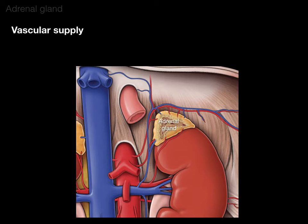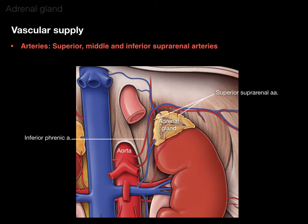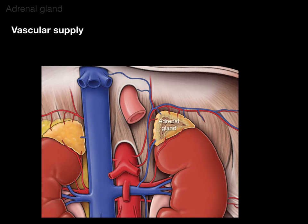The arteries that supply the adrenal gland are the suprarenal arteries — there are three of them. Coming off the aorta is the inferior phrenic artery, which gives off the superior suprarenal arteries. The middle suprarenal artery comes right off the aorta. And the inferior suprarenal arteries come off the renal arteries. All three supply the adrenal gland.